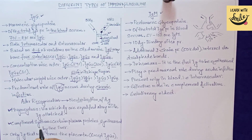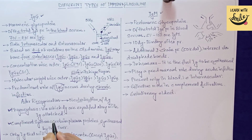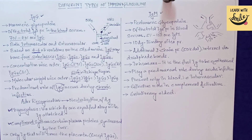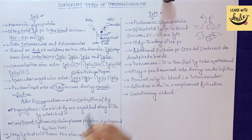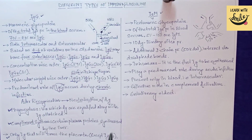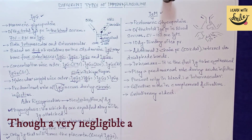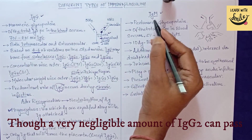The complement system involves certain proteins released by the liver, which are usually present in an inactive form in the blood. When stimulated by antibodies bound to antigen, these proteins can perform neutralization. Importantly, IgG is the only immunoglobulin that can cross the placenta during pregnancy — very important from an exam point of view. Of the four subclasses, IgG1, IgG3, and IgG4 can cross the placenta, but IgG2 cannot.